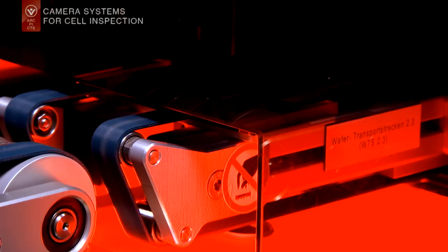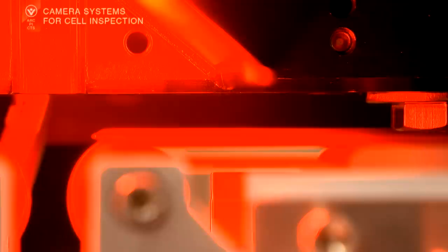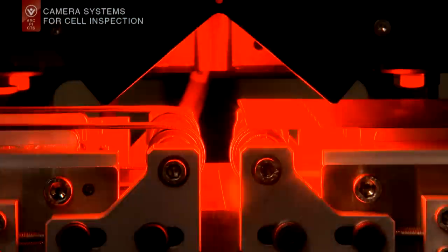Thanks to a sophisticated line scan camera setup, deviations in the metallization of the front side can be detected reliably with Vitronic Solar PI.